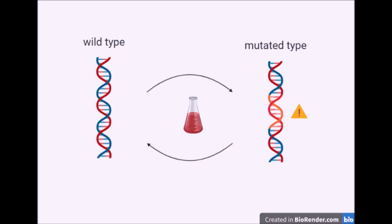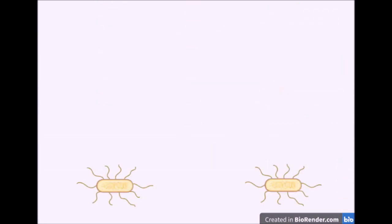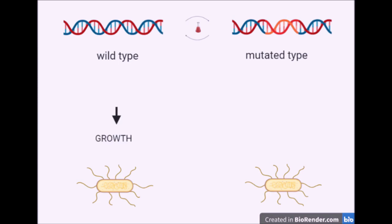Besides the triggering of change by mutagenic substances, the mutation can also occur naturally. The Ames test uses a bacterial strain where the mutation decides on growth or death, since one change in an amino acid synthetic pathway can lead to the requirement for an exogenous amino acid source. This means that the amino acid must be provided to the bacterium; otherwise it can neither grow nor survive.